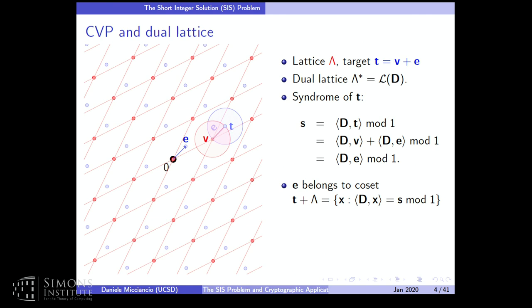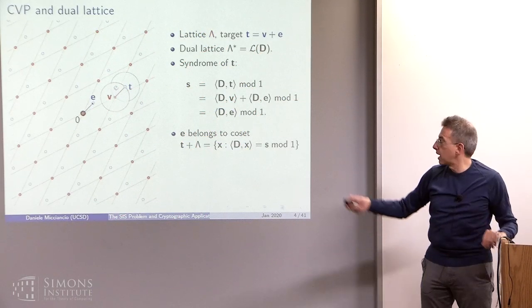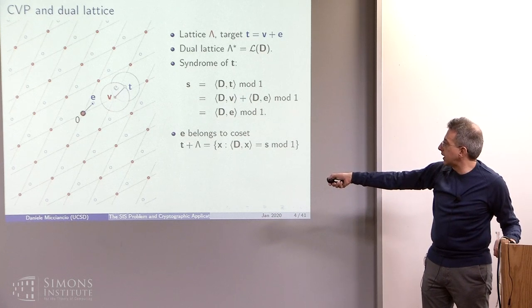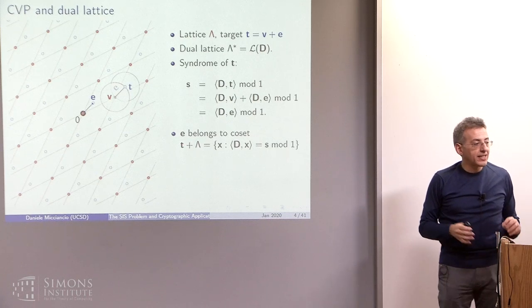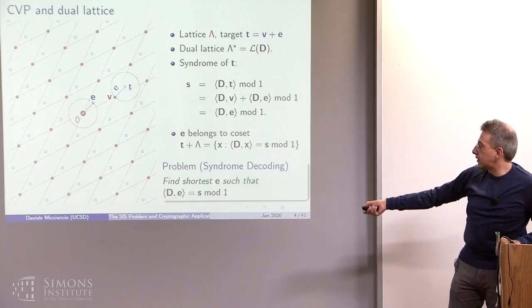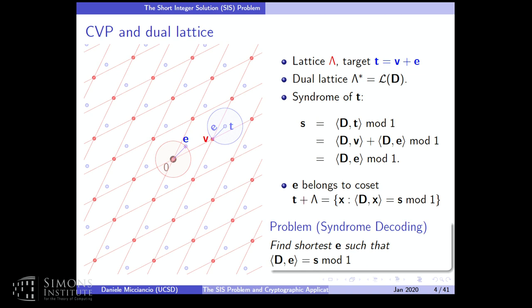One way to think of this problem is: you are given a shifted copy of the lattice — all the points in space that have a certain syndrome. I give you the syndrome, and you want to find the point in this shifted copy of the lattice which is as short as possible. That's perfectly equivalent to finding the lattice point closest to the target. Instead of considering the lattice centered at zero and a target at an arbitrary position, you can always shift the lattice by the target position and try to find a point in this shifted lattice as close as possible to the origin — the shortest point in the coset. This is called the syndrome decoding formulation of the problem.